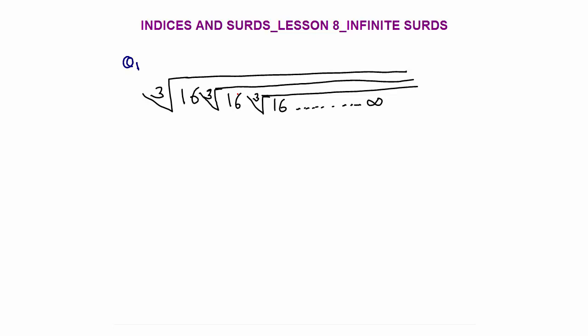Can I say that I can assume this entire expression as x? So x is: 16 cube root of 16 cube root of 16 cube root till infinity. Now, I am separating out part of this expression.